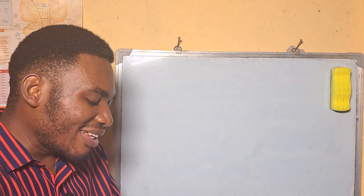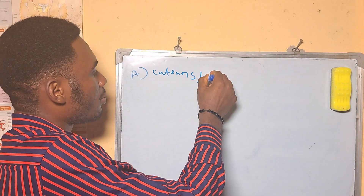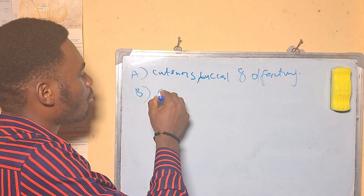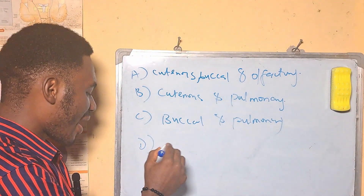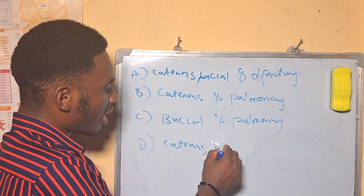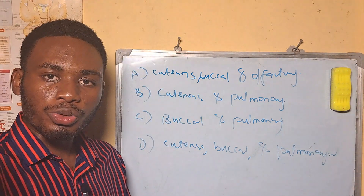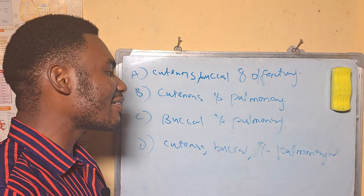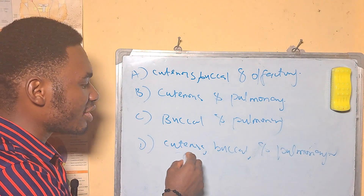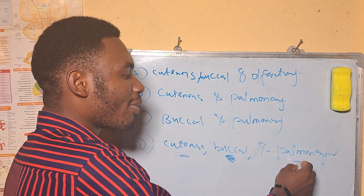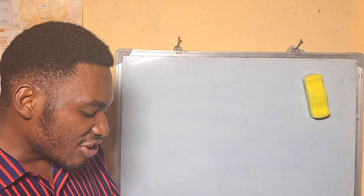The method of respiration found in adult frogs is — A: cutaneous, buccal and olfactory, B: cutaneous and pulmonary, C: buccal and pulmonary, D: cutaneous, buccal and pulmonary. The answer is D. Frogs have major adaptive organs that help them respire in different environments: cutaneous is through the skin, buccal is through the mouth, and pulmonary is through the lungs.